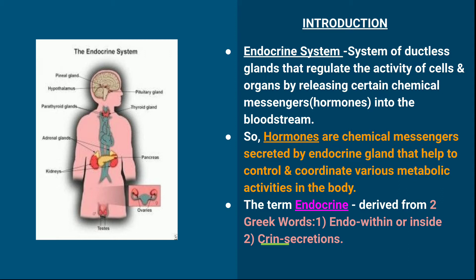The endocrine system is a system of ductless glands that regulate the activity of cells and organs by releasing certain chemical messengers. These chemical messengers are known as hormones, which are released into the bloodstream. The glands involved are ductless and they regulate the activity of cells and organs by secreting certain chemicals.